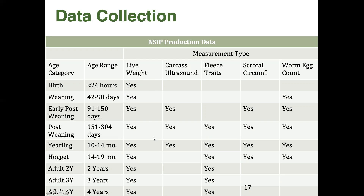Just because all these different EBVs are available doesn't mean you have to collect all of that data on your farm or ranch. You could potentially weigh sheep every 30 to 60 days, ultrasound animals three different times, take multiple fleece samples, scrotal circumferences, and worm egg counts — you could be collecting data until the cows come home. What I usually tell people is: if there's a trait that's economically important to you or to the customers buying your genetics, measure those traits. There are no traits that are mandatory in NSIP — simply collect the traits that are going to be beneficial to your operation.